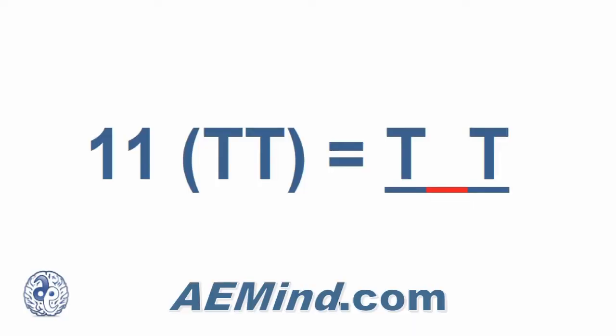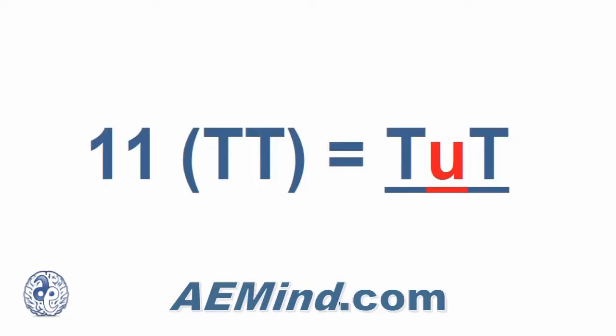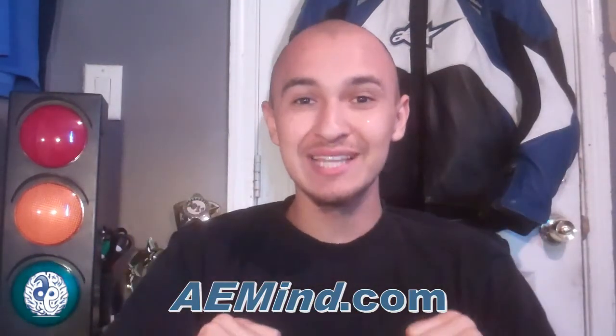The next one is number 11. We take the number one and the number one, we throw in the consonant sounds — one and one is T and T. The T sound and the T sound, throw in the vowel U, and you get Tut. My picture for number 11 is King Tut — picture King Tut coming back from the dead, still mummified but walking and running. So every time you see, hear, or read the number 11, you think of King Tut. Tut for number 11.